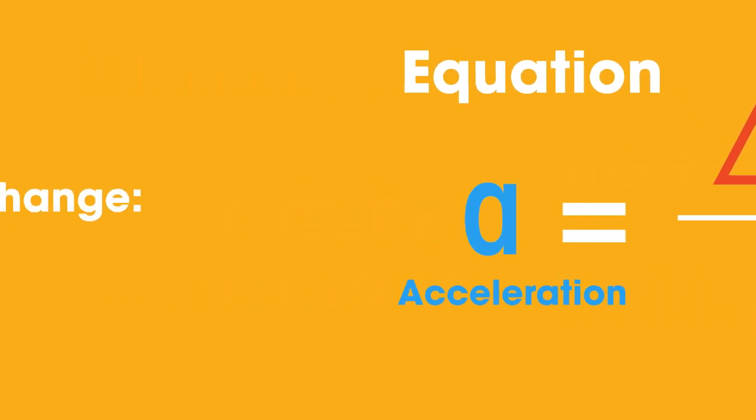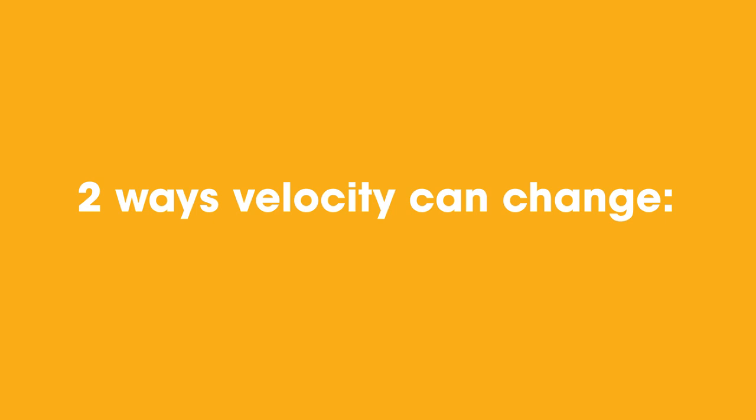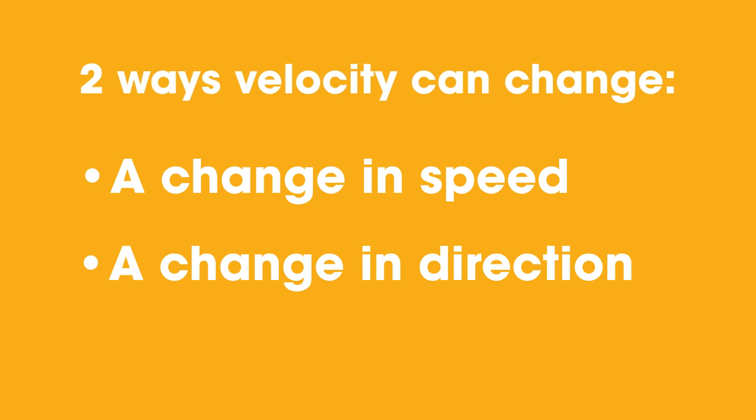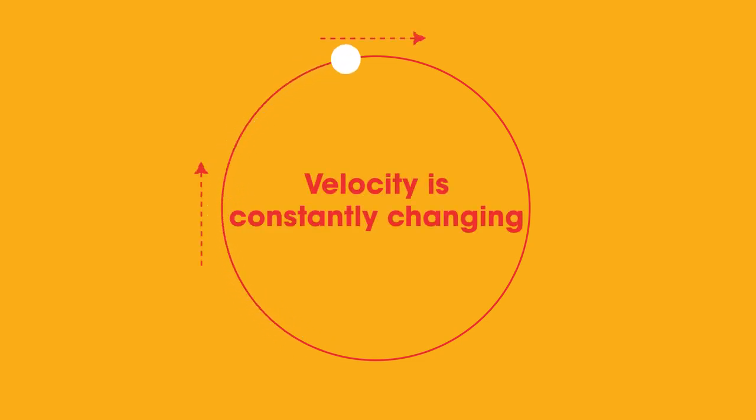The two ways in which velocity can change are a change in speed or a change in direction. So when you're moving in a circle at a constant speed, your velocity is constantly changing because the direction you are moving in is also constantly changing.